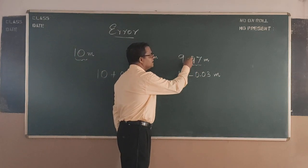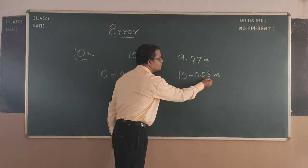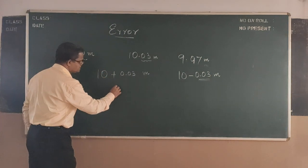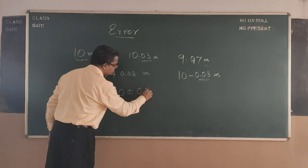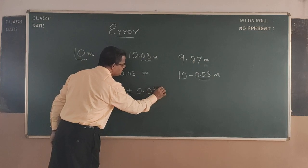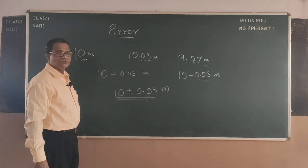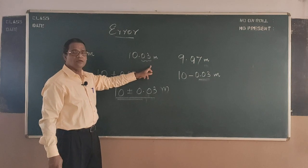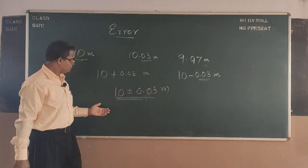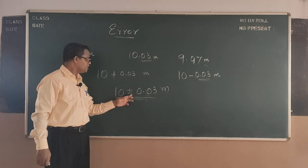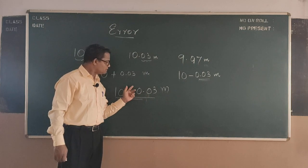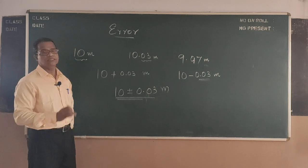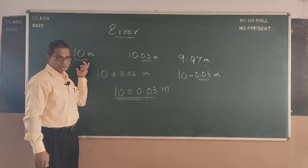So there are two measurements. One is 9.97 and the other is 10.03 meters. Together when I express the same length, the measured length as 10 plus or minus 0.03, this 0.03 is coming as error from the measurement, plus or minus from the actual value.